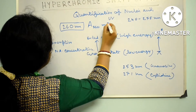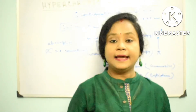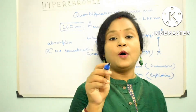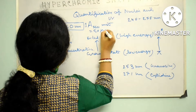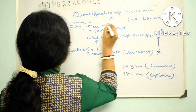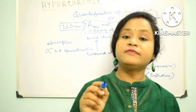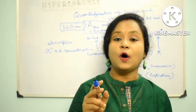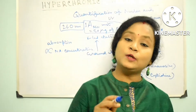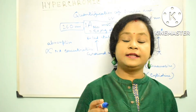For double-stranded DNA, 1 A260 unit is equivalent to 50 micrograms of DNA — that means a solution of DNA with a concentration of 50 micrograms per ml has an absorbance at 260 nm. For single-stranded DNA, it is equivalent to 33 micrograms of DNA, and for single-stranded RNA, it is equivalent to 40 micrograms of RNA.